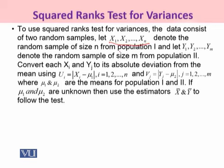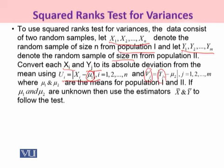To use the scored rank test for variances, the data must consist of two independent samples randomly drawn from two different populations: X₁, X₂, … Xₙ from population 1 and Y₁, Y₂, … Yₘ from population 2. We then convert Xᵢ and Yⱼ to their absolute deviations, where Uᵢ = |Xᵢ − μ₁| and Vⱼ = |Yⱼ − μ₂|. When μ₁ and μ₂ are unknown, we use their estimators X̄ and Ȳ calculated from the samples.